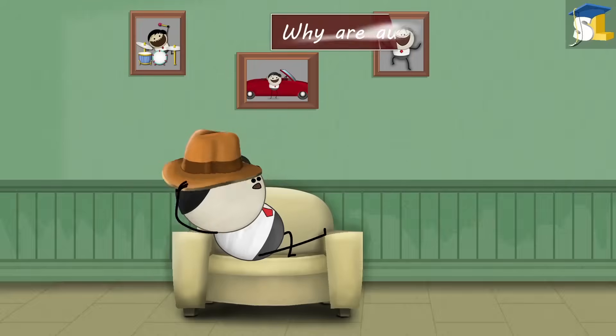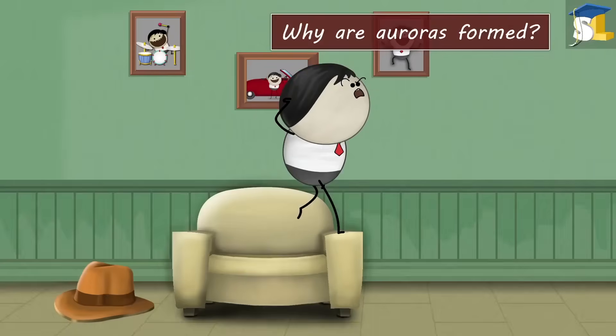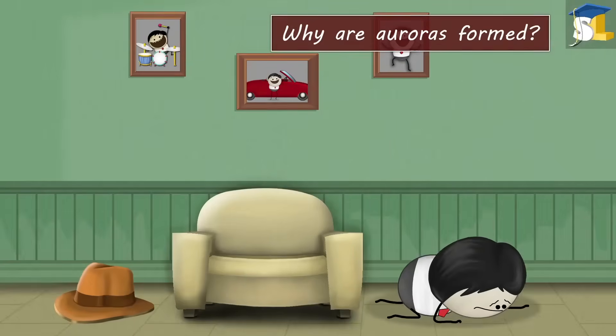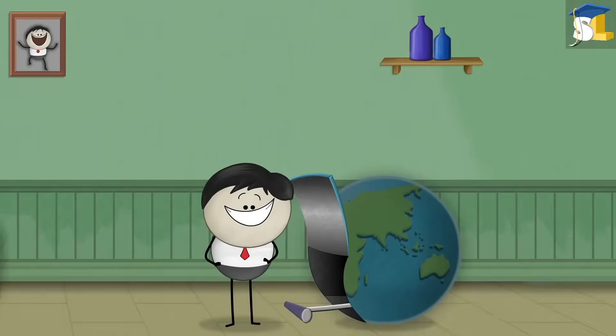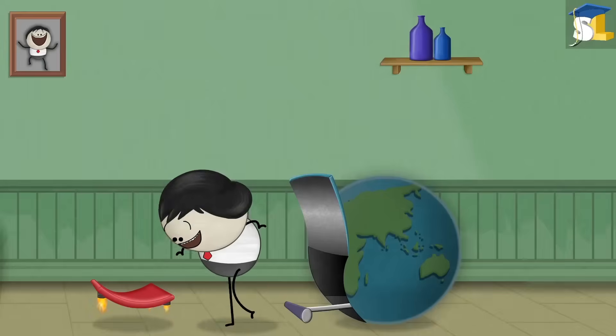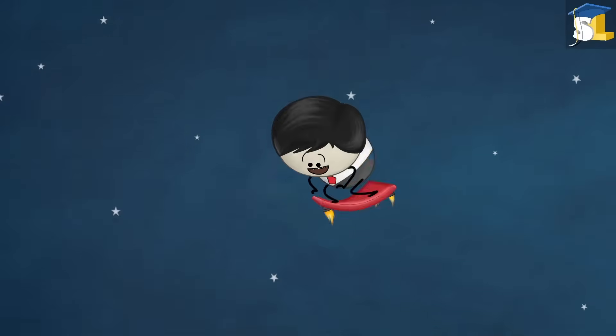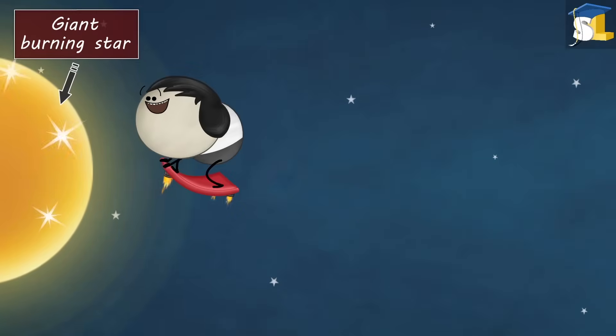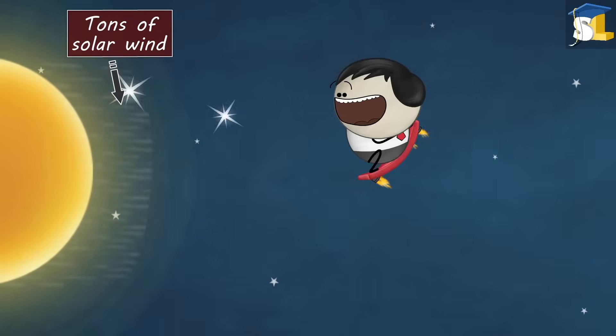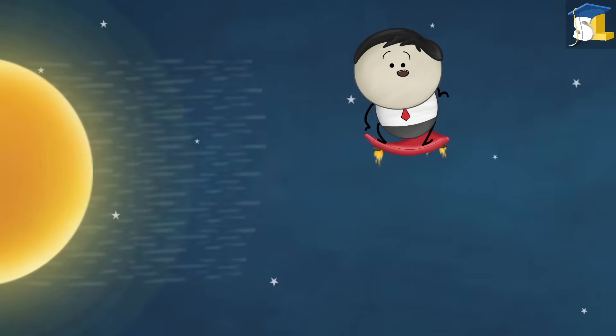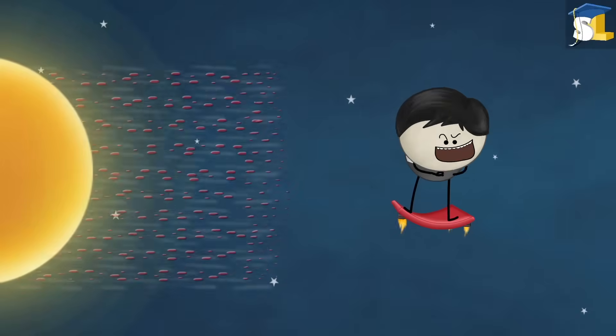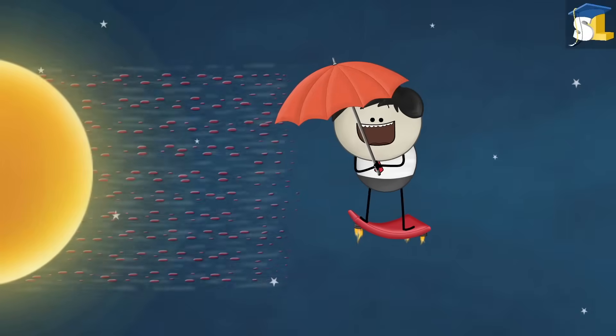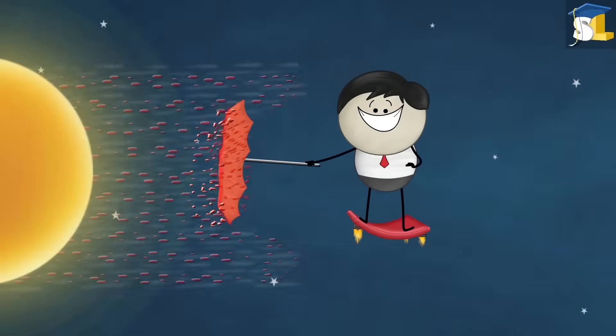Auroras. Why are auroras formed? Maybe because the earth forgets to switch off the lights. No. Let me explain. Our sun is a giant burning star. It expels tons of solar wind into space. Solar wind consists of super hot charged particles which are fatal. So, should we use a big umbrella to protect ourselves from these particles? No.